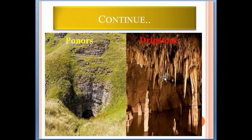Dripstones are calcareous deposits formed by percolating water containing calcium carbonate in solution, occurring in the form of solid columns. They contain downward-extending stalactites, as you can see — these extend downward. The upward-extending form is known as a stalagmite. As you can see, these are the upward-extending features of calcium carbonate — these are stalagmites and these are stalactites.